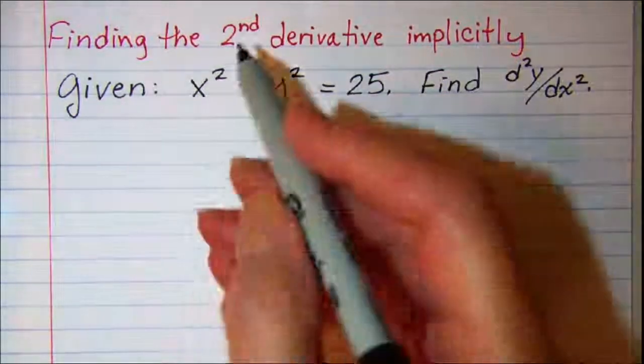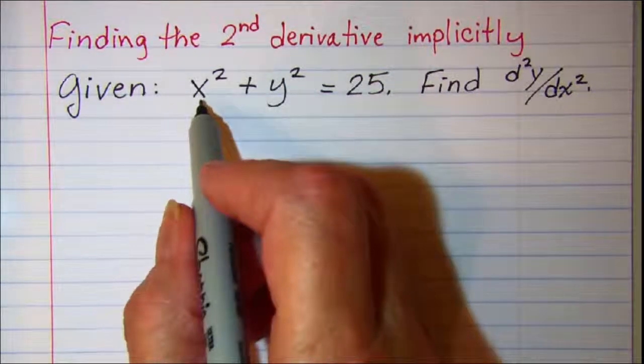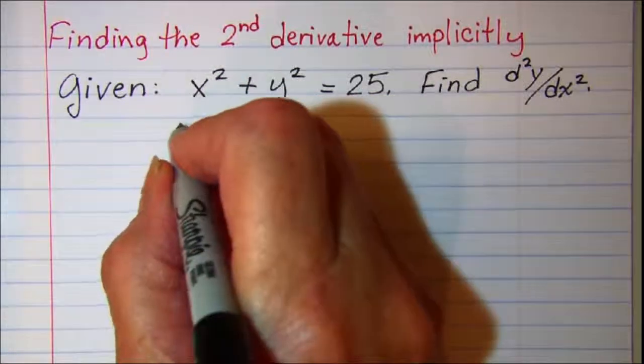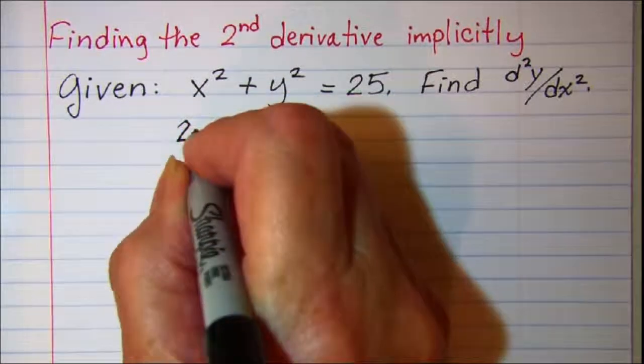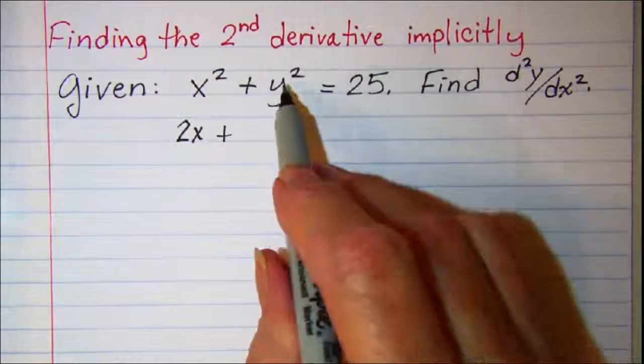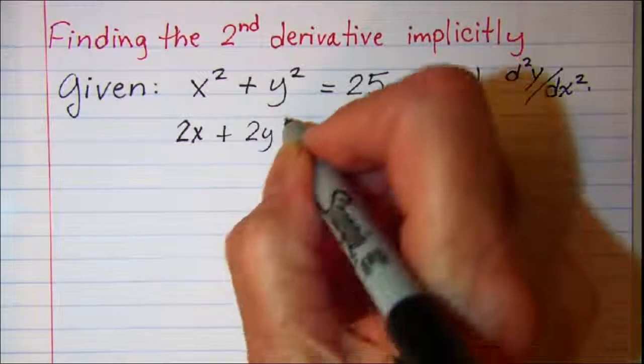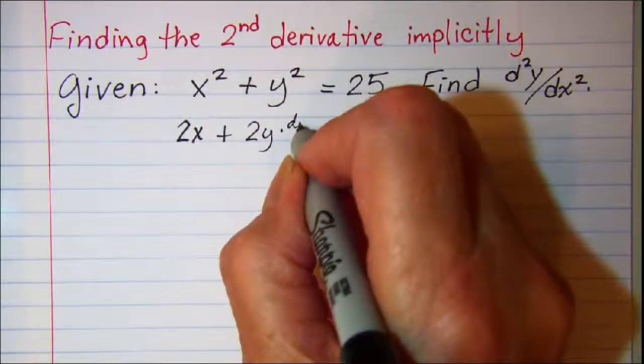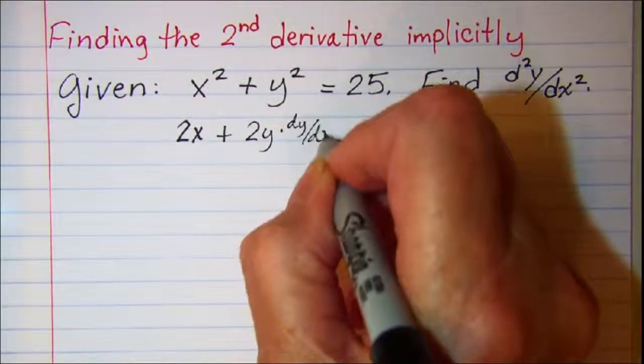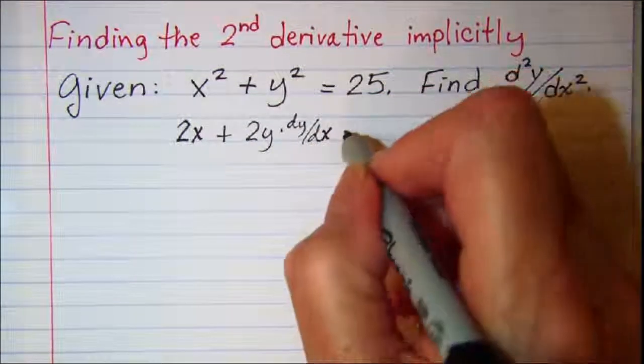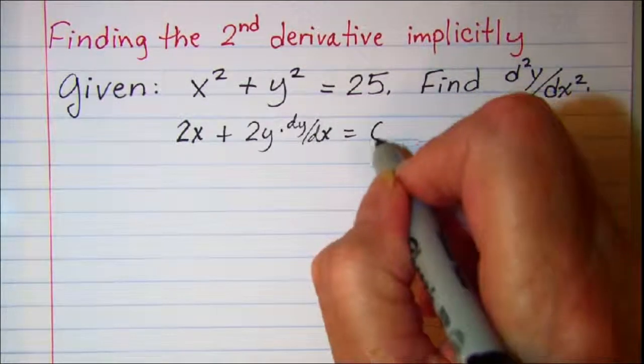So our first derivative, the derivative of this first term is 2x. The derivative of the second term is 2y and then times dy/dx. The derivative of a constant is zero.